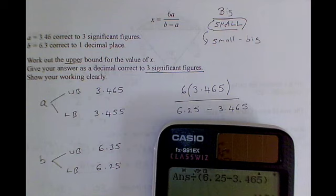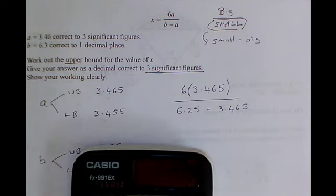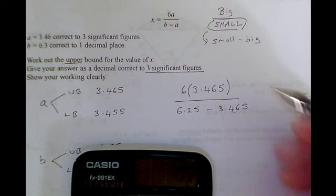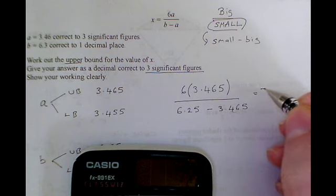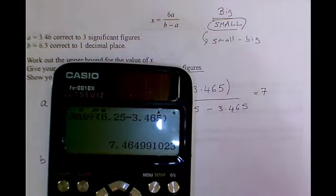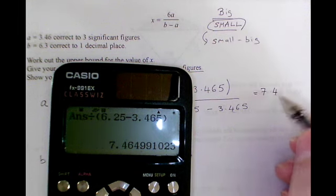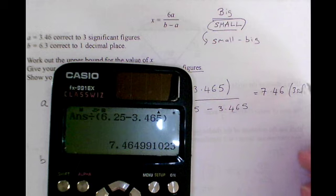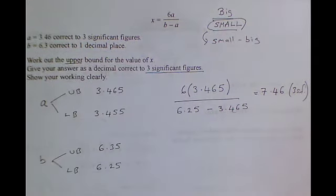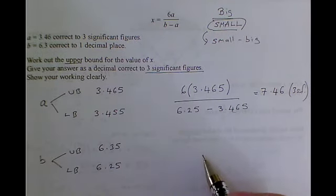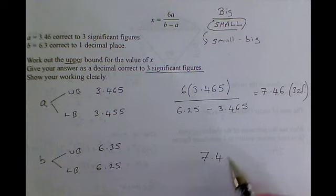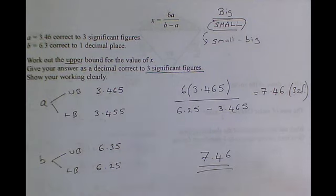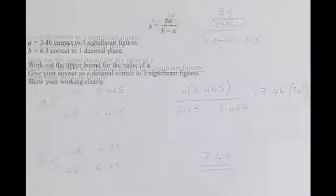And that gives me 7.46, I believe, to 3 sig figs. Okay. So the answer they want is 7.46. That's the biggest value possible for x with these input values.